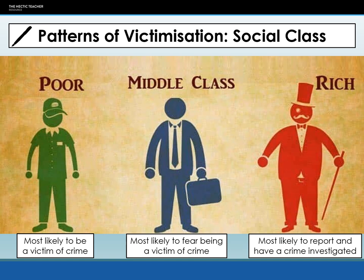To summarise: working class are more likely to be a victim of crime; the middle class are more likely to fear being a victim but not actually be one; and the upper class are most likely to report the crime and have it investigated. Things like murder are always reported and investigated, but property damage or robbery — people may think it's not worth reporting, or the police may decide it's not worth their time.